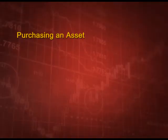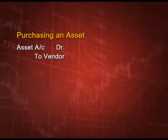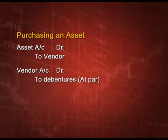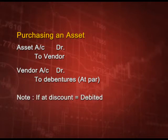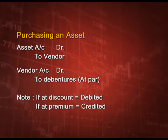When we issue debentures for consideration other than cash, it means we are purchasing something instead of paying cash and issuing debentures. Suppose we are purchasing an asset: the entry will be asset account debit to vendor, and the next entry will be vendor account debit to debentures. If issuing at discount, discount is debited; if issuing at premium, premium is credited — just like shares.